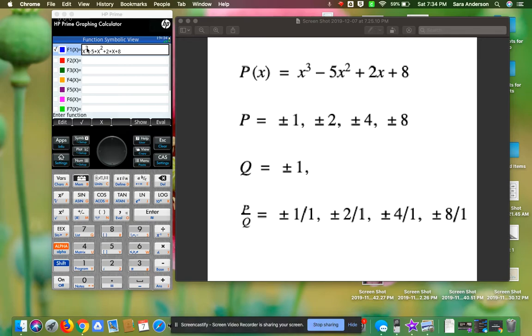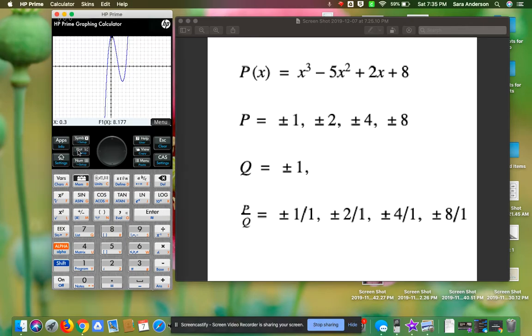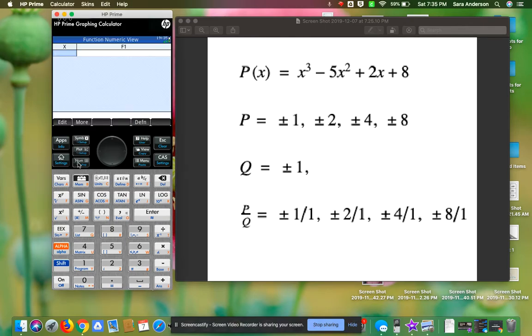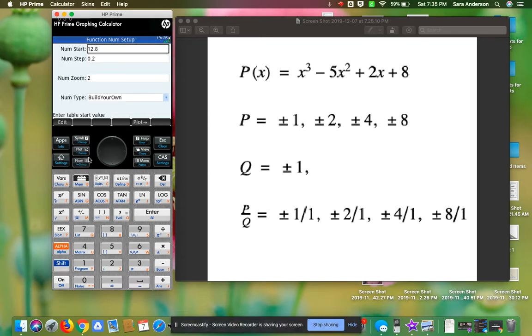Make sure you plug it into your graphing calculator correctly. Use the x function button that they give you. If you're trying to use the letter on your calculator, it might not work. Once you enter it, click plot, then go to num. If you do not see this view and your view just has a bunch of numbers in it, go to shift and setup, and make sure it says build your own as opposed to automatic.